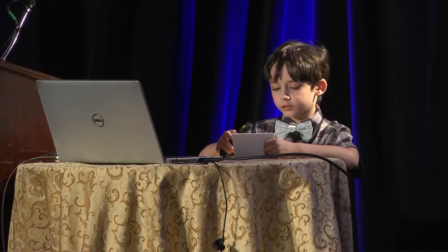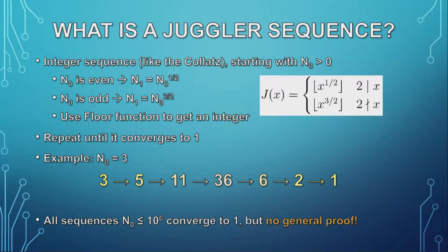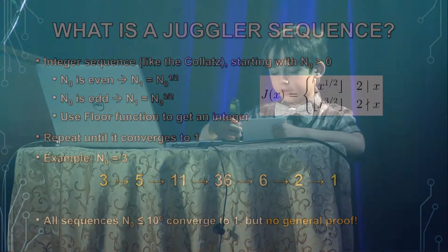I'd like to start with a short introduction to the juggler sequence for anyone who hasn't heard it before. A juggler sequence is an integer sequence, like the better-known Collatz sequence, where you start with an integer greater than zero. To get the next term, you either take the square root if it's an even number, or take the square root and cube the result if it's an odd number. Then you use the floor function to get it back to an integer. Repeat this process until it hopefully converges to one. We've computed all the sequences up to one million and they all converge to one, but there's no proof for all starting positive integers.